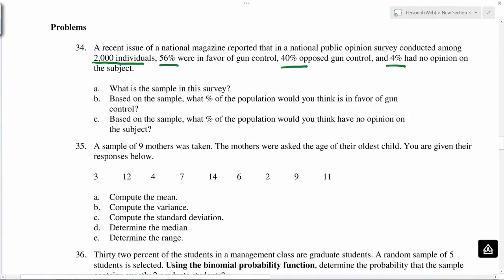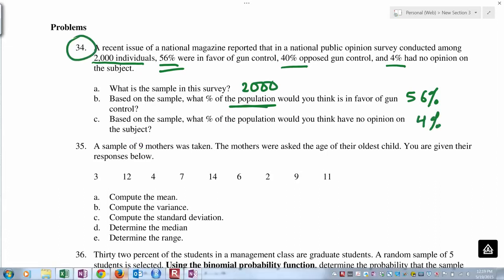What is the sample in this survey? The sample is 2000. Based on the sample, what percentage of population would you think is in favor of control? This is 56 percent. We use the sample to talk about the population. That's what is called statistical inference. Now, based on the sample, what percentage of the population would you think have no opinion on the subject? No opinion is 4 percent.